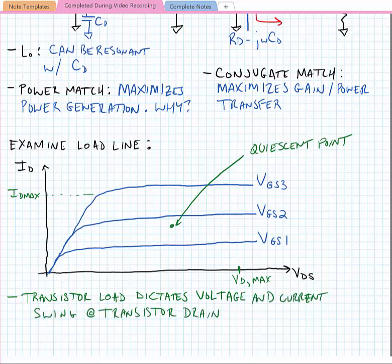So our load is effectively going to cause the signal current and signal voltage to swing. Ideally, the signal current and signal voltage would swing from the maximum current possible to the maximum voltage possible.